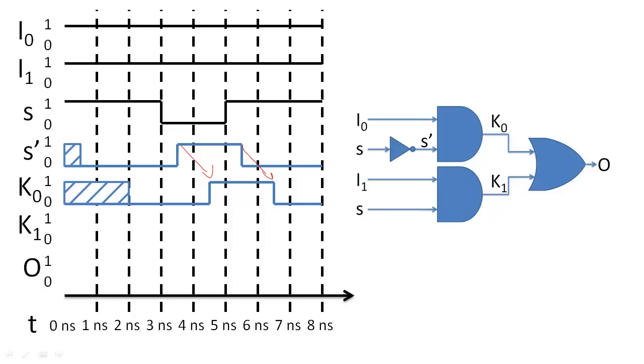The output of the AND gate from the bottom path will be 1, 1 ns after the selection input and I1 are 1. It will be 0 or undefined at all other times as well.